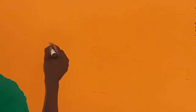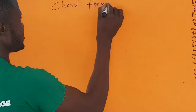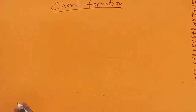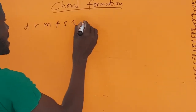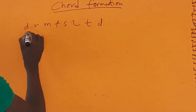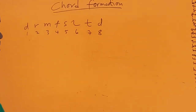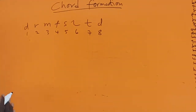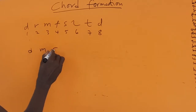Welcome to this guitar lesson. Today's topic is chord formation — how to form a chord. We have the solfège: do re mi fa so la ti do, and we number them one through eight. We form chords from this major scale. To form a chord, we use one, three, and five — that is do, mi, and so.